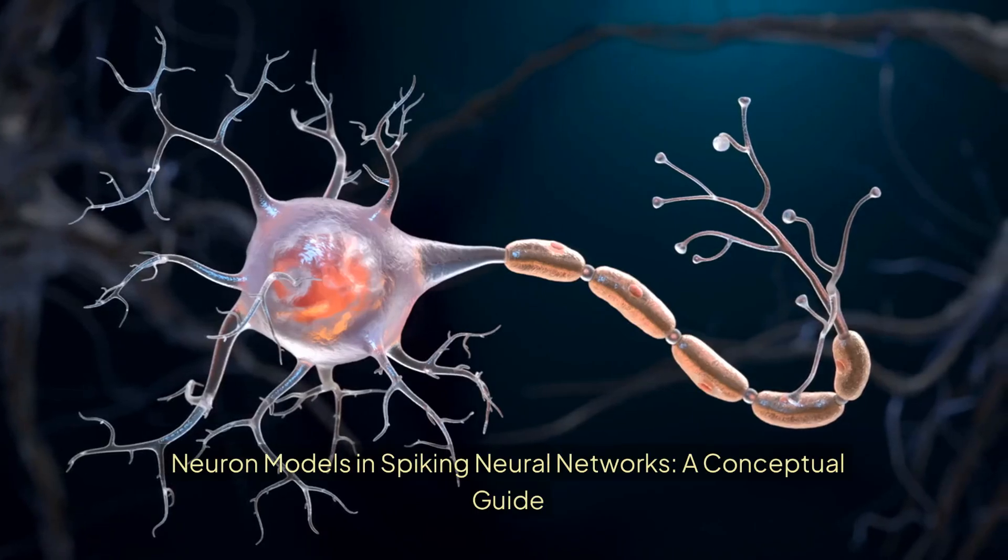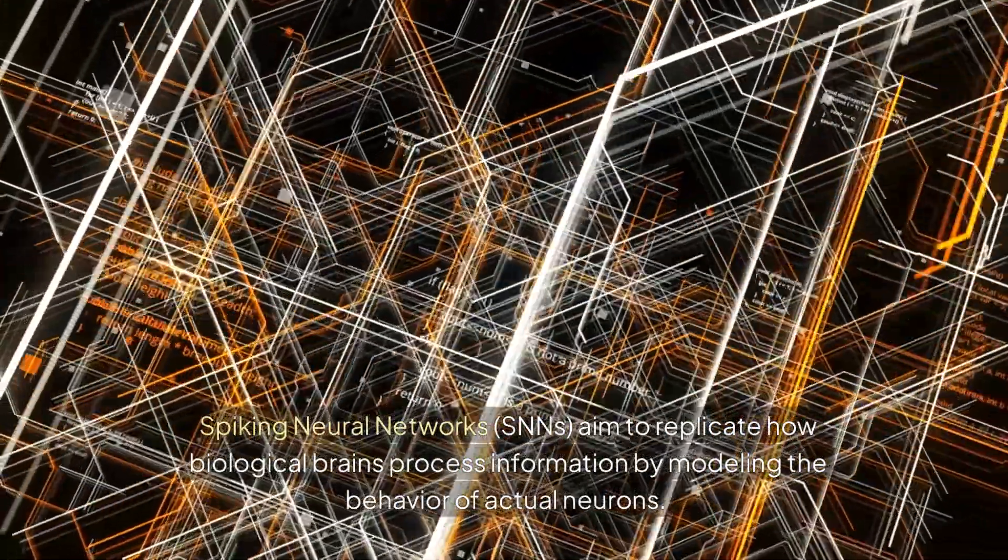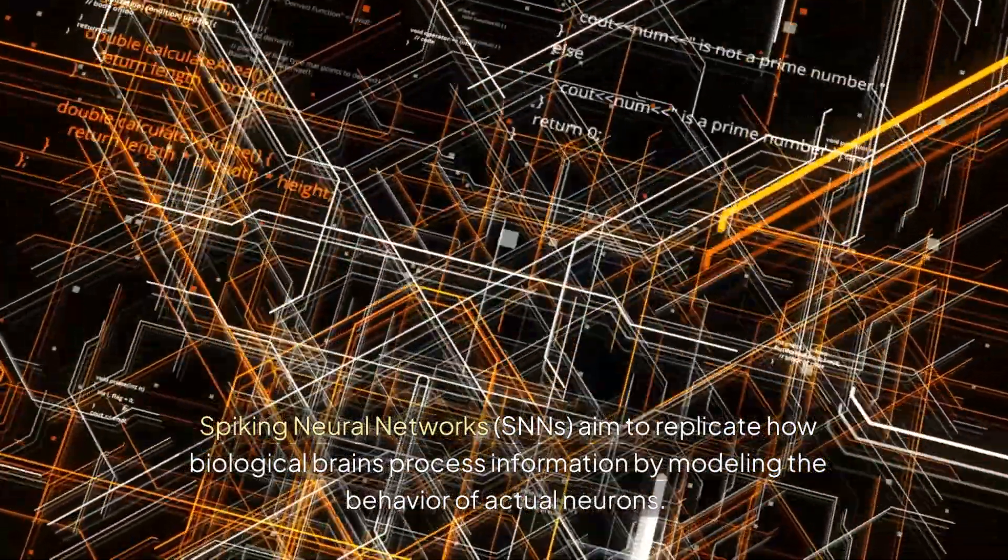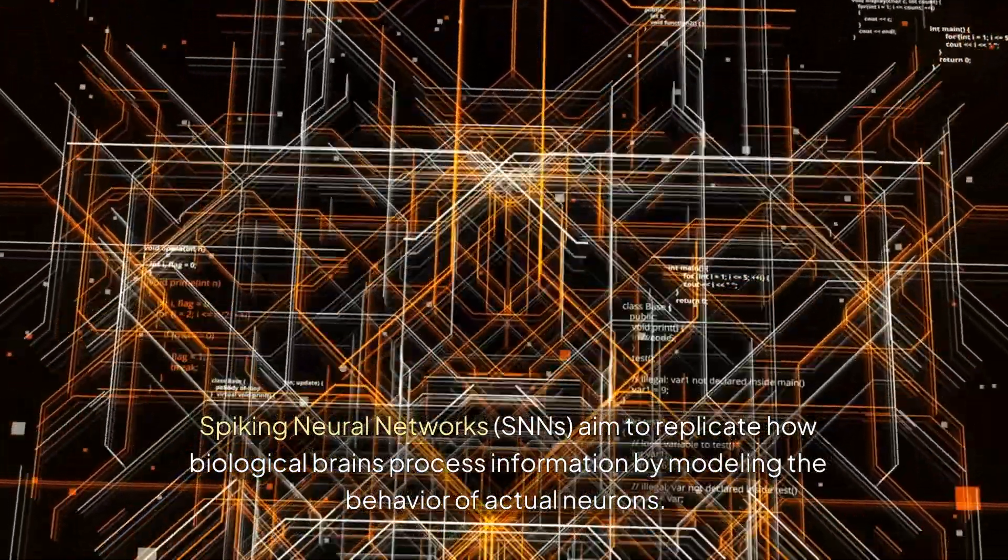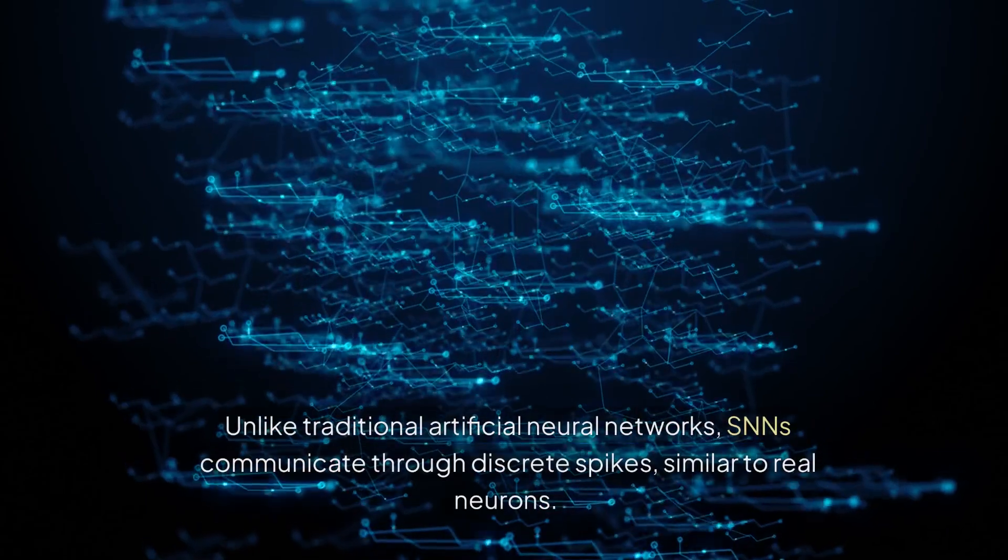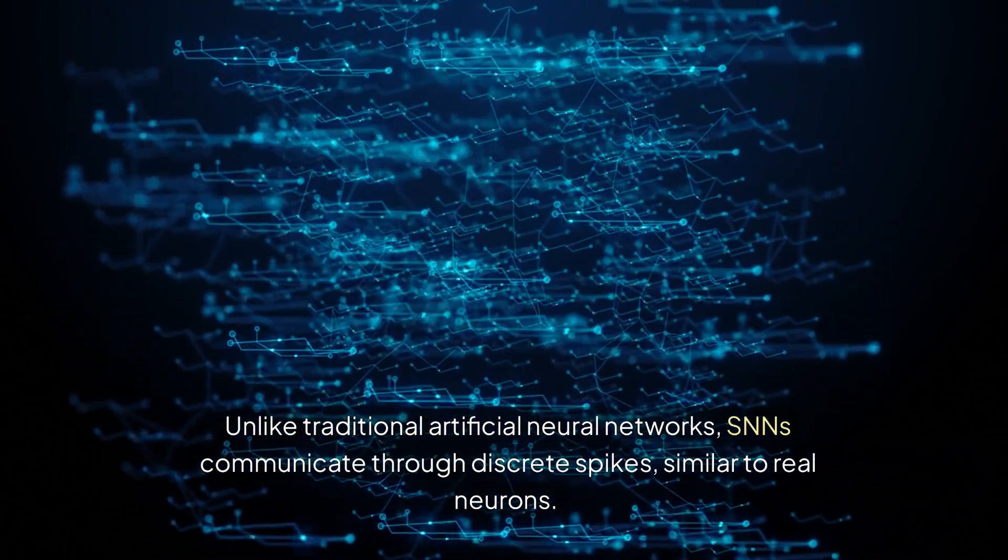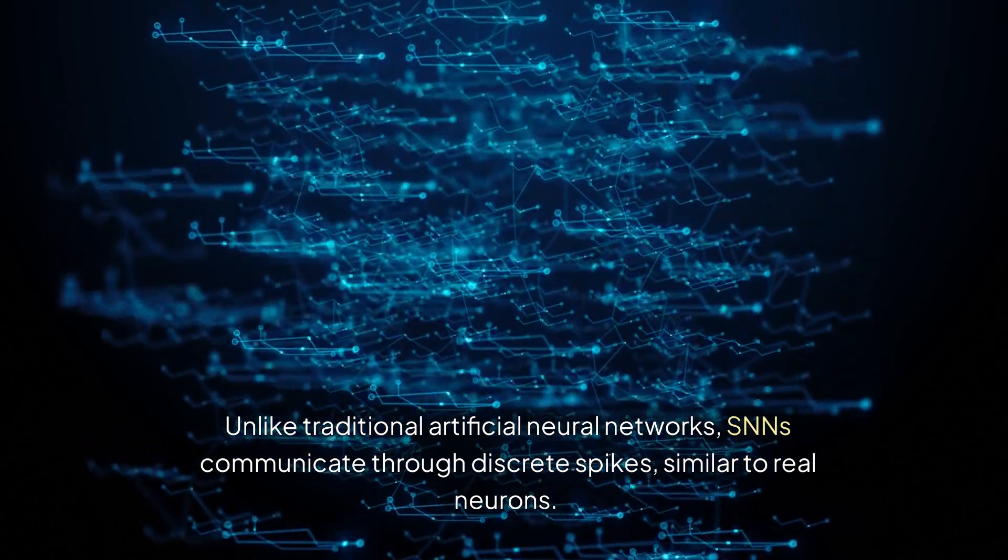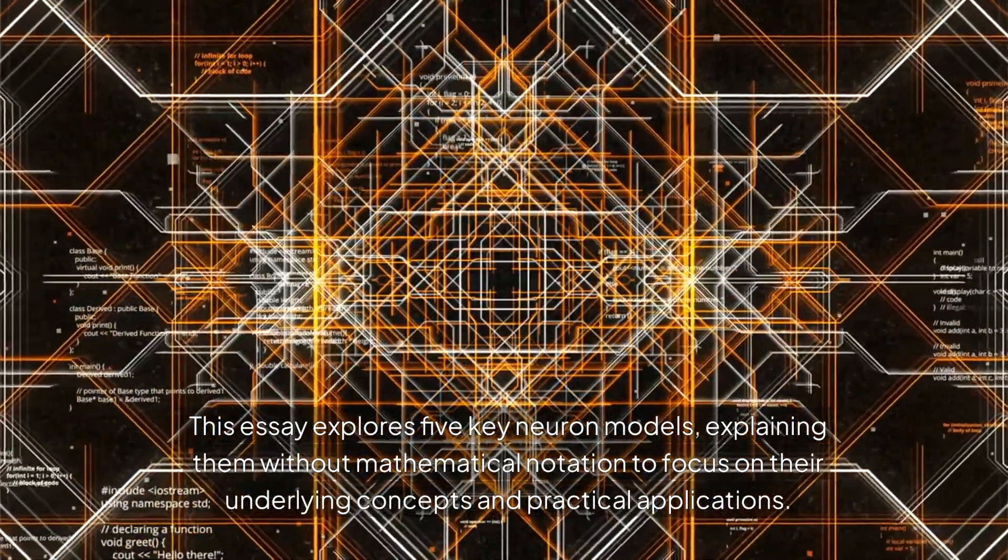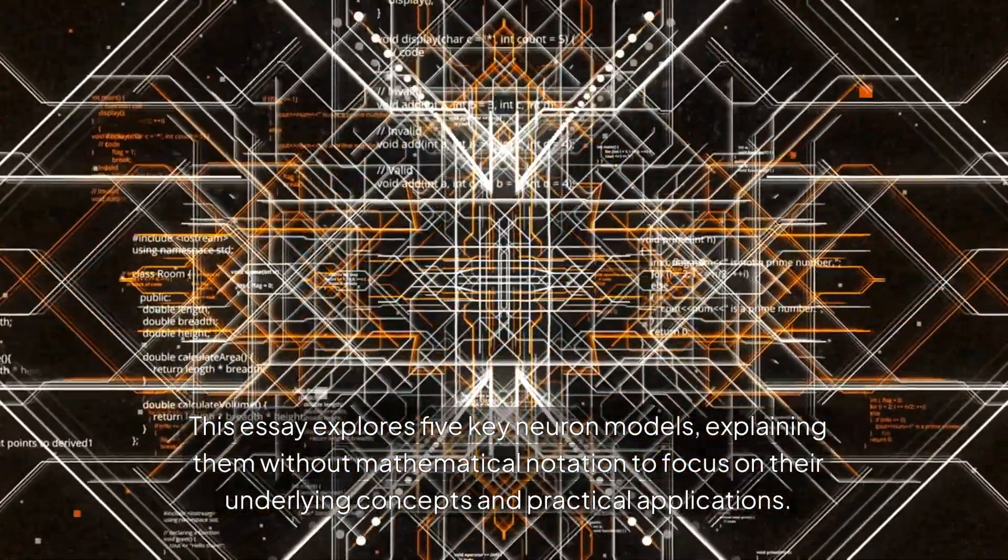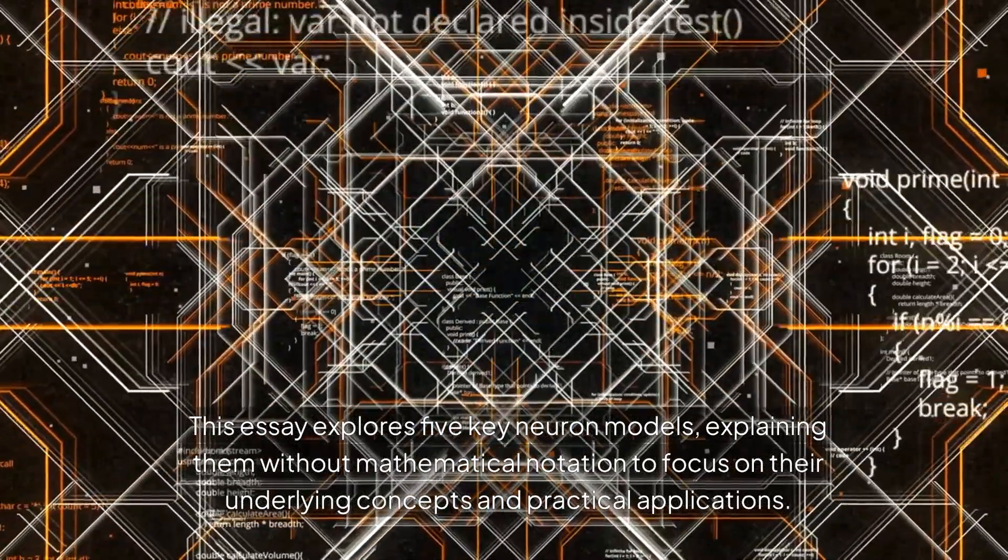Neuron models in spiking neural networks: A conceptual guide. Introduction. Spiking neural networks, or SNNs, aim to replicate how biological brains process information by modeling the behavior of actual neurons. Unlike traditional artificial neural networks, SNNs communicate through discrete spikes, similar to real neurons. This essay explores five key neuron models, explaining them without mathematical notation to focus on their underlying concepts and practical applications.